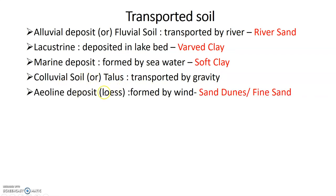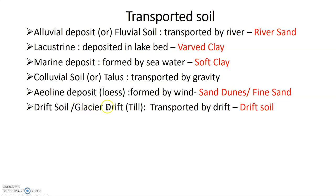Soil transported by gravity produces colluvial deposits. Wind deposits, also called loess, include fine sand dunes. Glacial drift or till is deposited by glacial action. Volcanic eruption produces volcanic soil.